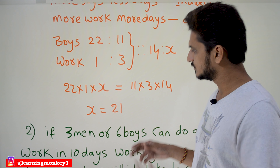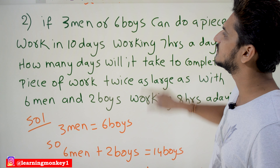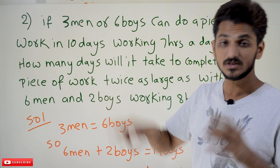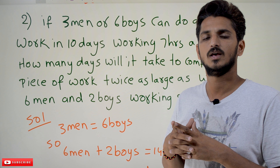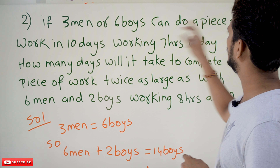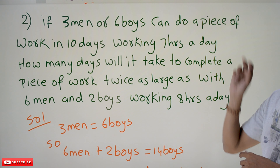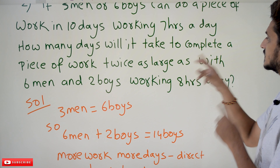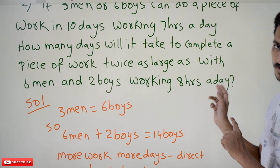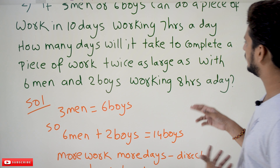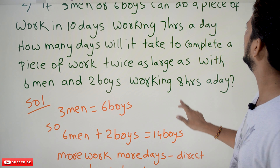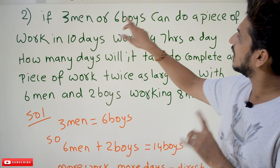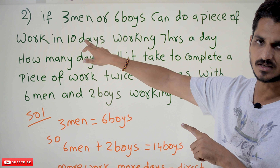We do one more example for better understanding. If three men equal six boys — so one man equals two boys — they can do a piece of work in 10 days working seven hours a day. How many days will it take to complete work twice as large, with six men and two boys working eight hours a day? We need to identify the number of days, so 10 is to x.